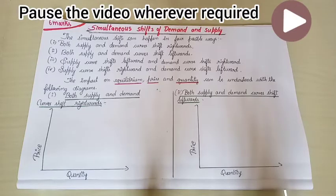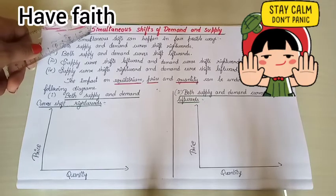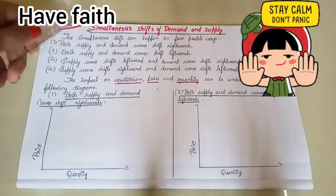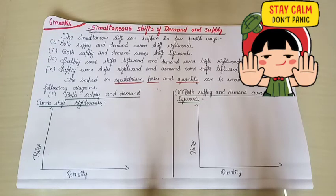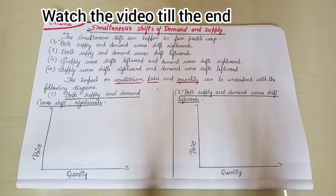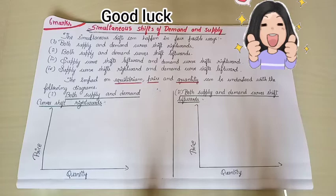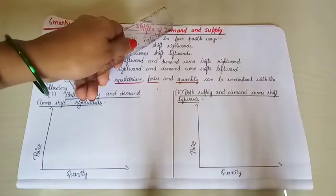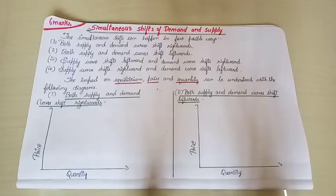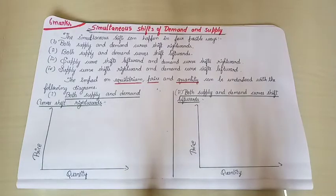Simultaneous shifts of demand and supply — what do we mean by simultaneous? At a time, both demand and supply either move in the same direction or opposite directions, and we will see the impact of that in this whole video.